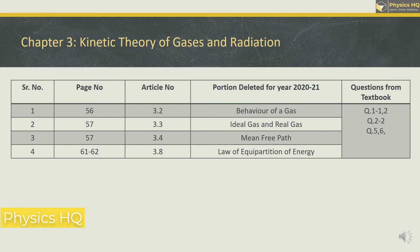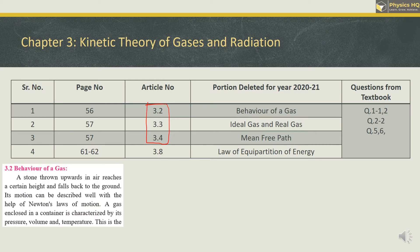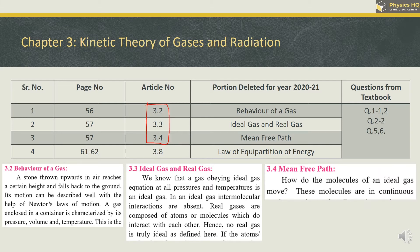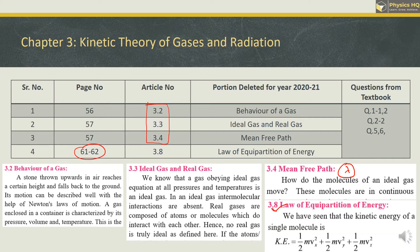In Kinetic Theory of Gases, there are small theoretical topics deleted. On page number 56, behavior of gas: ideal gas, real gas and mean free path — the formula for mean free path you will not do. Then on page 61-62, the Law of Equipartition of Energy is deleted, though going through it briefly is fine for basic understanding. The deleted questions include two MCQs — likely on ideal gas and mean free path — question 2 short answer, question 2 brief answer, and question numbers 5 and 6.